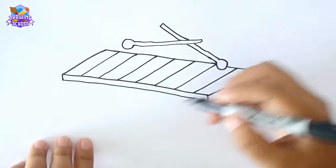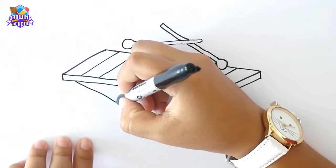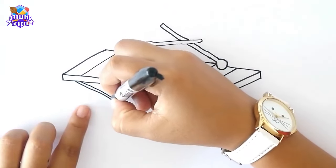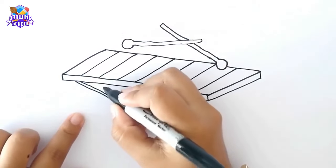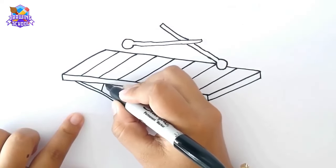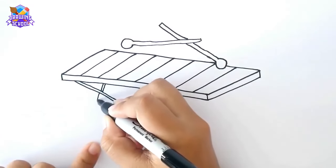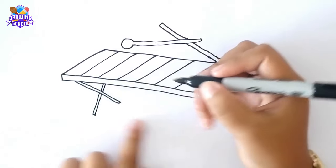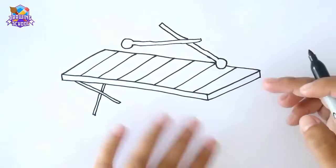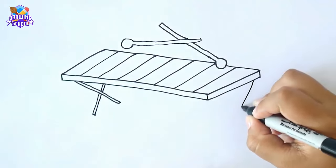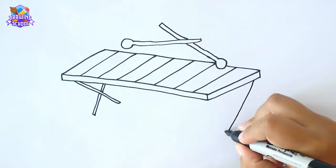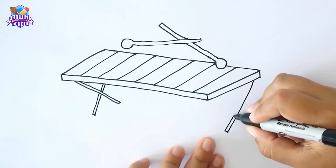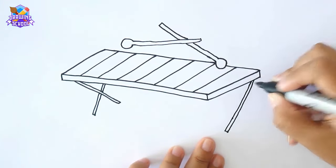Now we can add some extra details like some inclined lines for the legs of our instrument. We do the same thing on the other side too. And we cross it again.